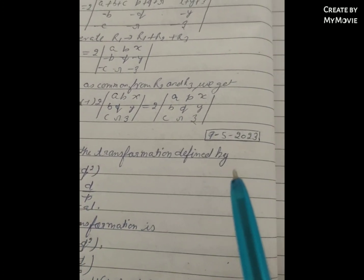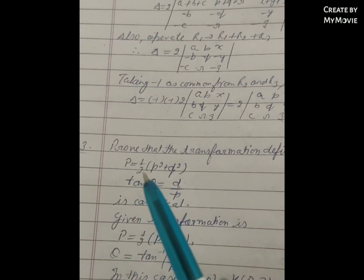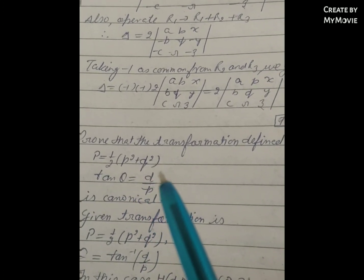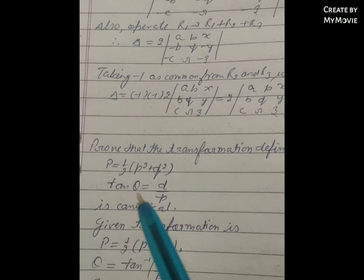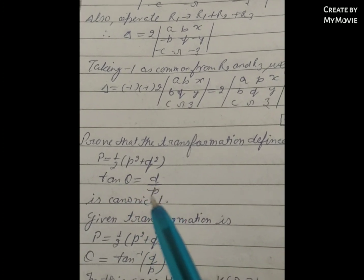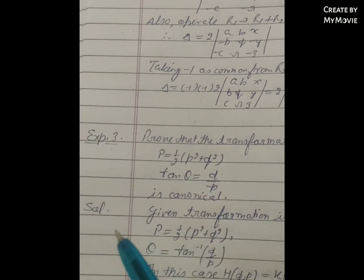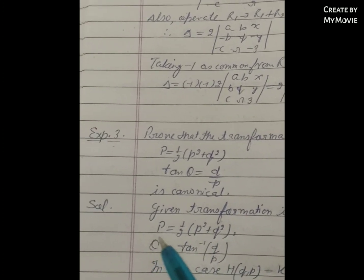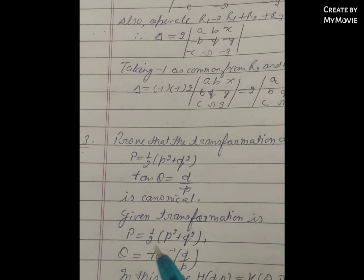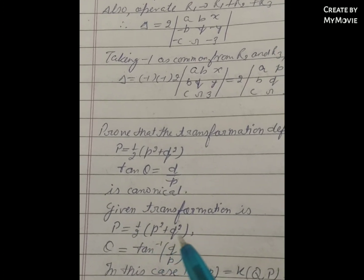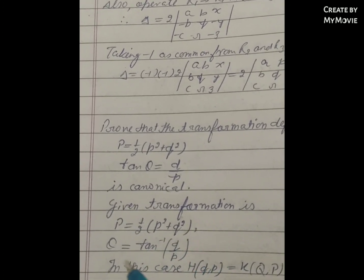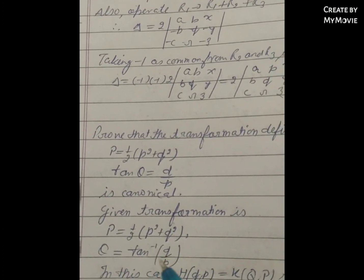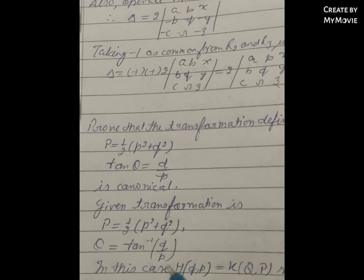Prove that the transformation defined by P = ½(p² + q²) and Q = tan⁻¹(q/p) is canonical.